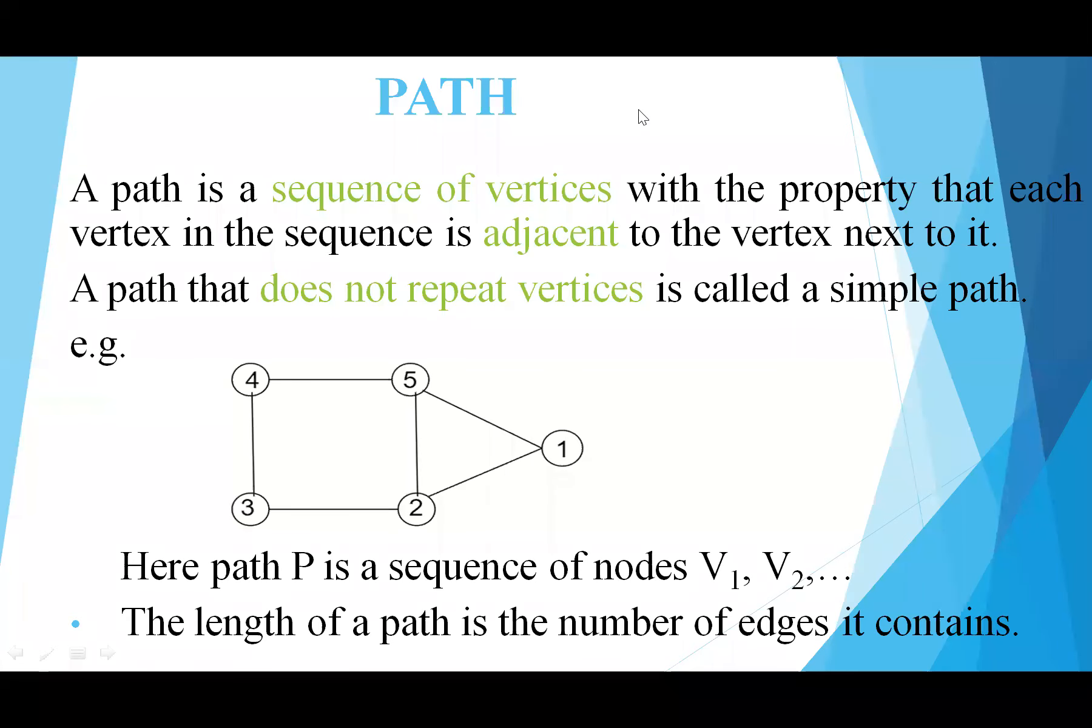This presentation covers path and cycle in graph theory in discrete mathematics. A path is a sequence of vertices with the property that each vertex in the sequence is adjacent to the vertex next to it.